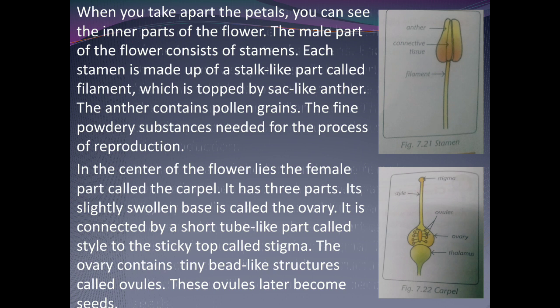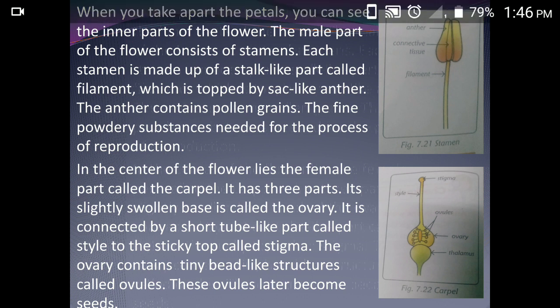The ovary contains tiny bead-like structures called ovules. You can see the ovules present in the ovaries in the picture. These ovules later develop and become seeds.